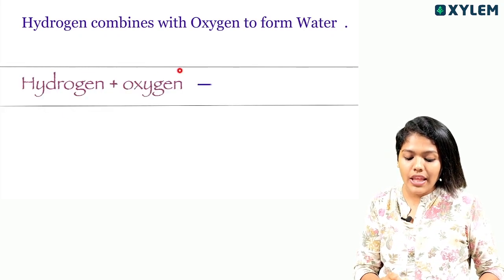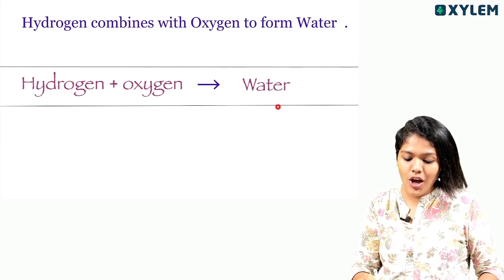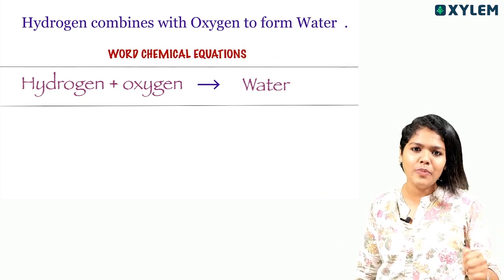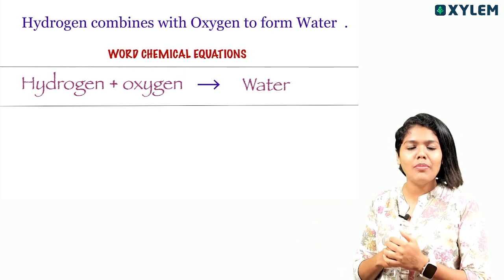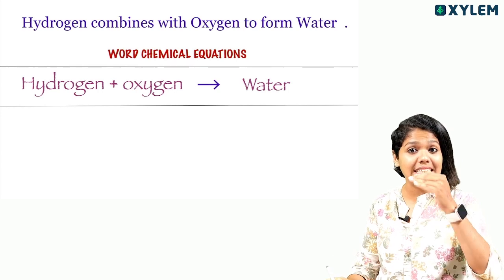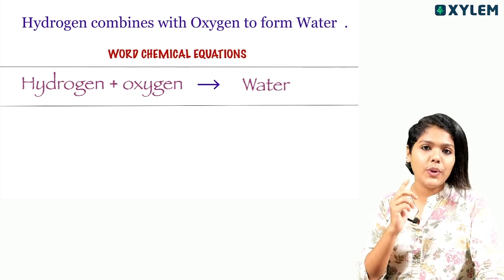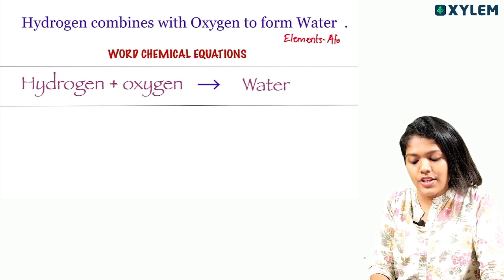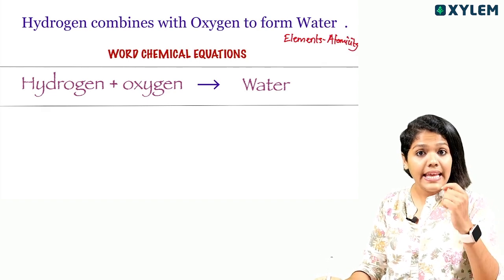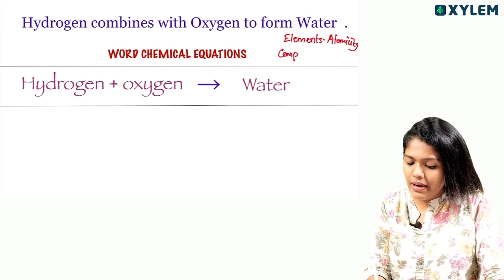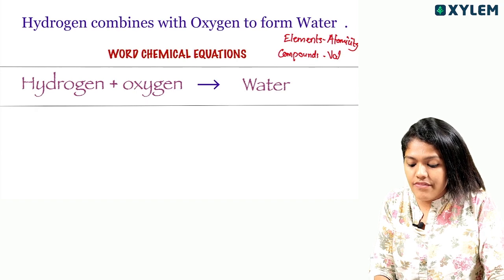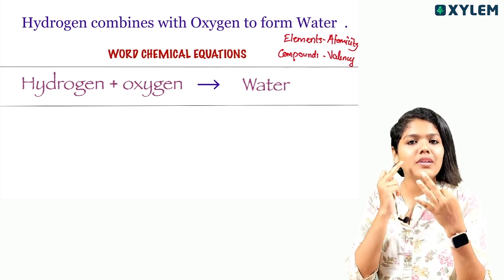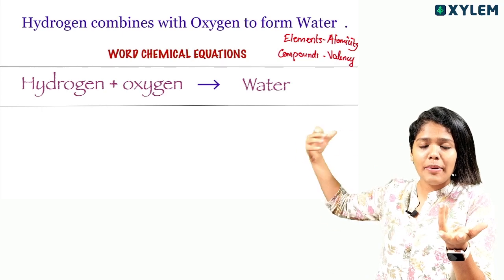We call it a word chemical equation. Hydrogen and oxygen combine to form water. What do we call the word chemical equation? We call it a skeletal formula. You can write the elements on the atomicity basis, and for compounds, on the valency basis. So: element, atomicity, diatomic, monatomic, triatomic, polyatomic.